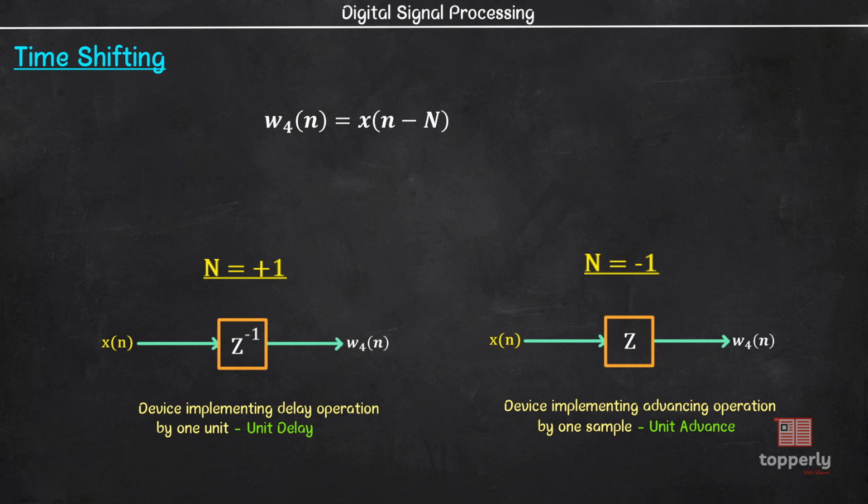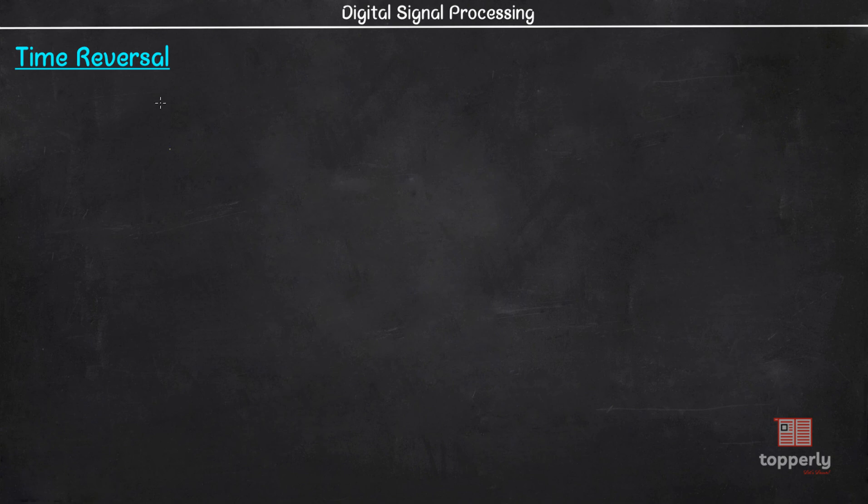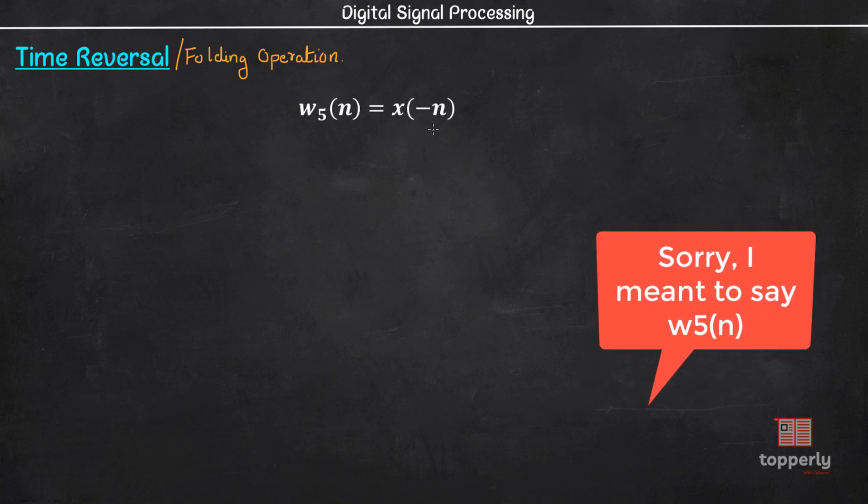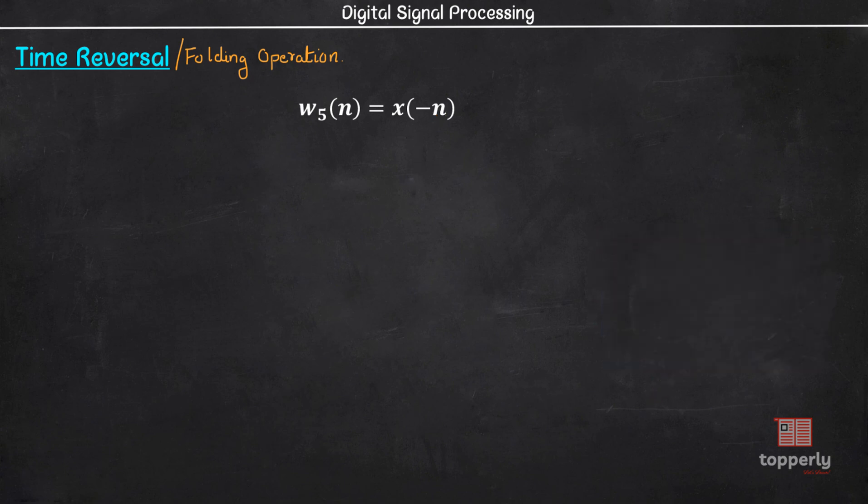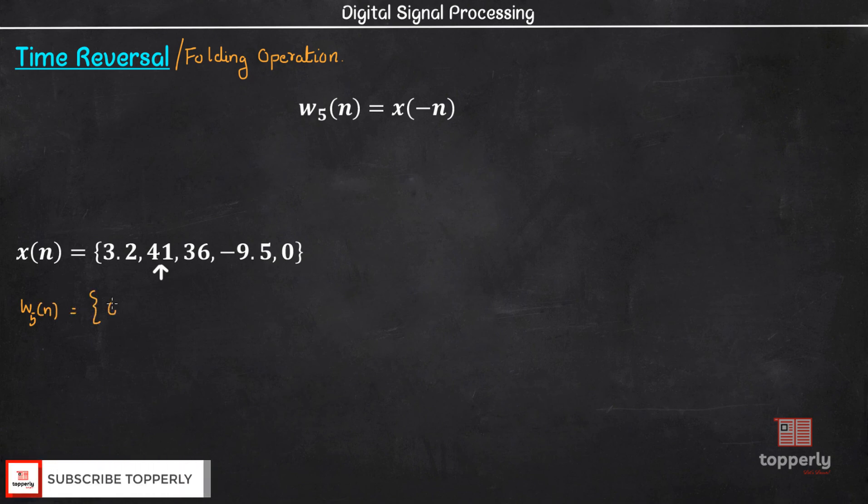The last basic operation is time reversal. This is also called folding operation. If we perform folding operation on a sequence x of n then the new sequence is w5 of n where w5 of n is x of -n. So if we take our sequence x of n then w5 of n will be 0, -9.5, 36, 41, and 3.2. So this is the new sequence w5 of n.